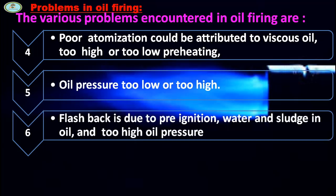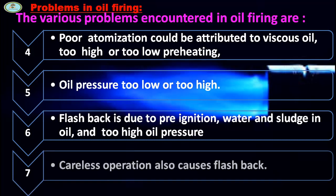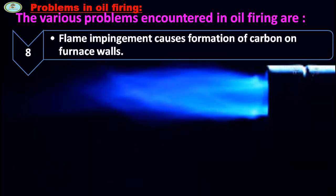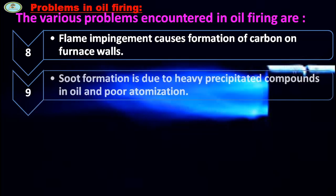Flashback is due to pre-ignition, water and sludge in oil, and too low oil pressure. Careless operation also causes flashback. Flame impingement causes formation of carbon on furnace walls. Soot formation is due to heavy precipitated compounds in oil and poor atomization.